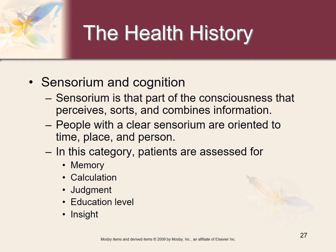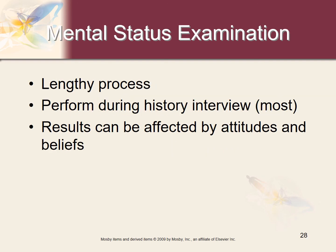Sensorium and cognition — sensorium is that part of consciousness that perceives, sorts, and combines information. People with a clear sensorium are oriented to time, place, and person. In this category, patients are assessed for memory, calculation, judgment, education level, and insight. Most of the mental status exam can be done during the health history interview, and results can be affected by attitudes.